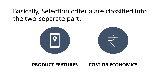We can generally classify the criteria into two different groups. The first one is criteria based on product features and the second one is based on cost or economics. In product features, criteria related to dimension, size, shape, tolerances, surface finish, and strength are included. In cost or economics, criteria related to raw material cost, transportation cost, and machine cost are included.